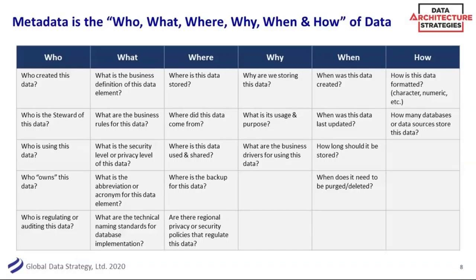A useful framework — almost a Zachman-style view — is the who, what, where, why, when, and how of data. Who created the data? Who's the data steward? What's the data structure? What are the business definitions? Where is the data stored — that's data lineage. When thinking about metadata, cycling through each dimension helps ensure you're capturing full context. Sometimes we do a whole lot on the 'how' — the format and data sources — but forget the 'why,' which should come first.